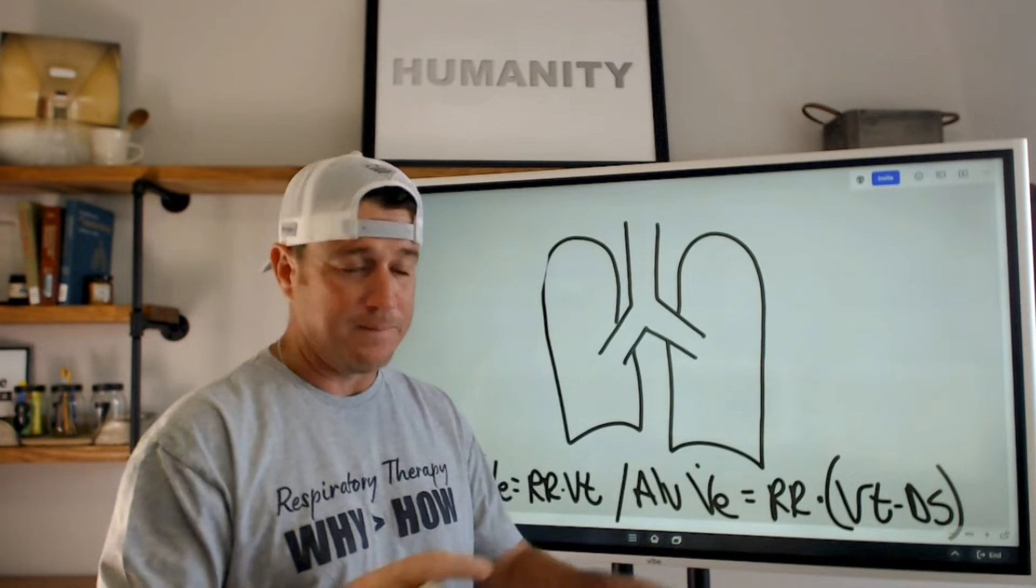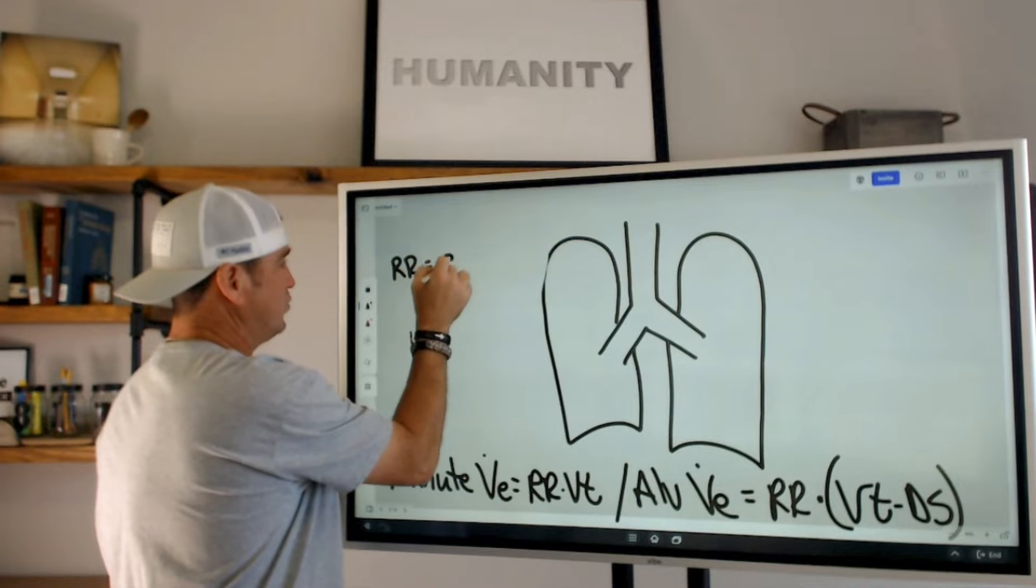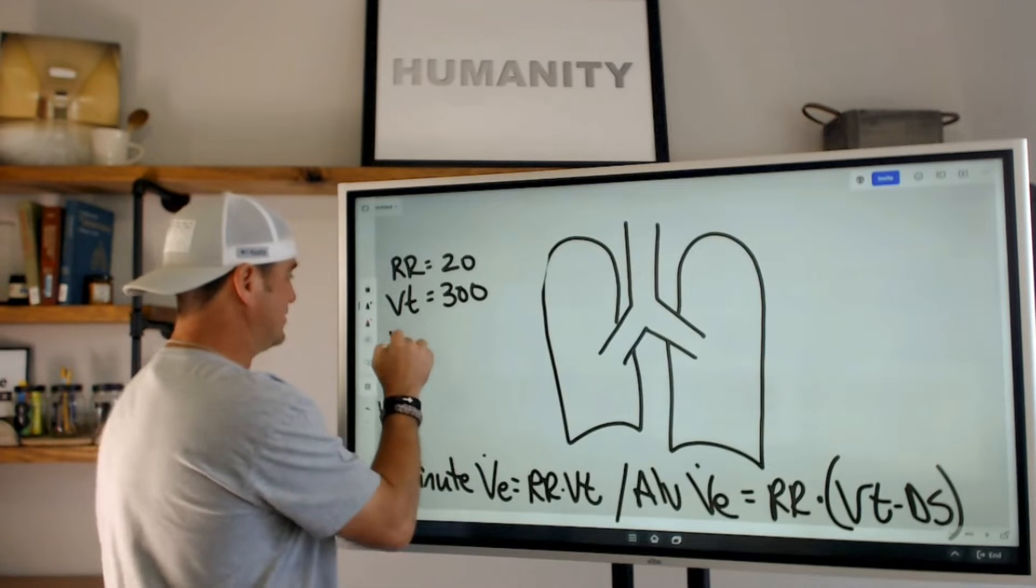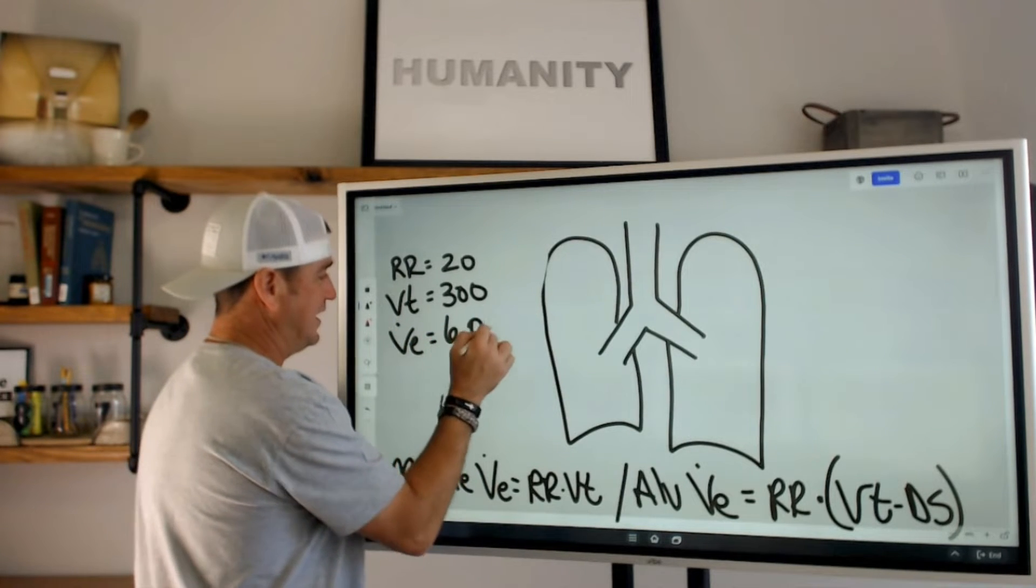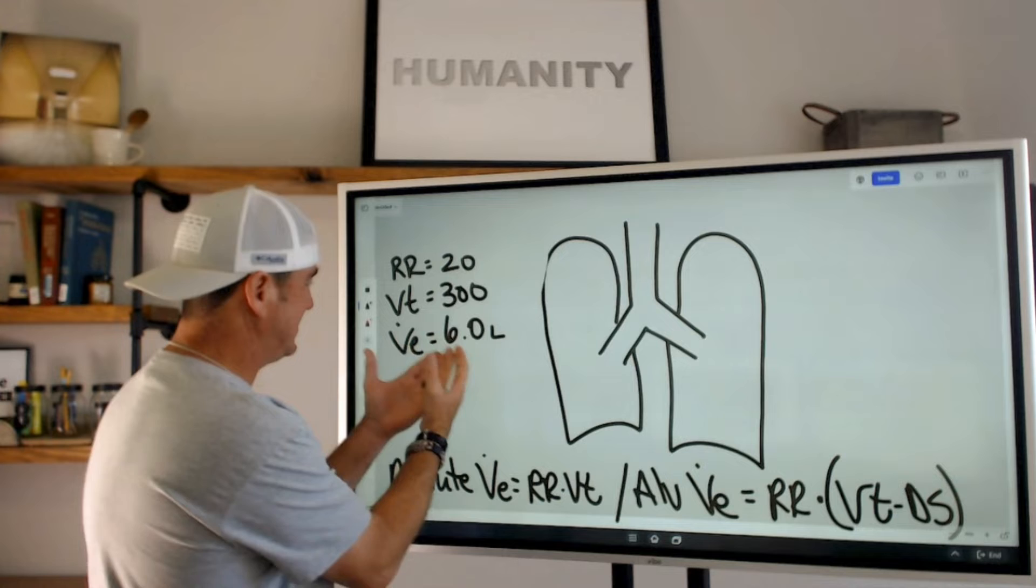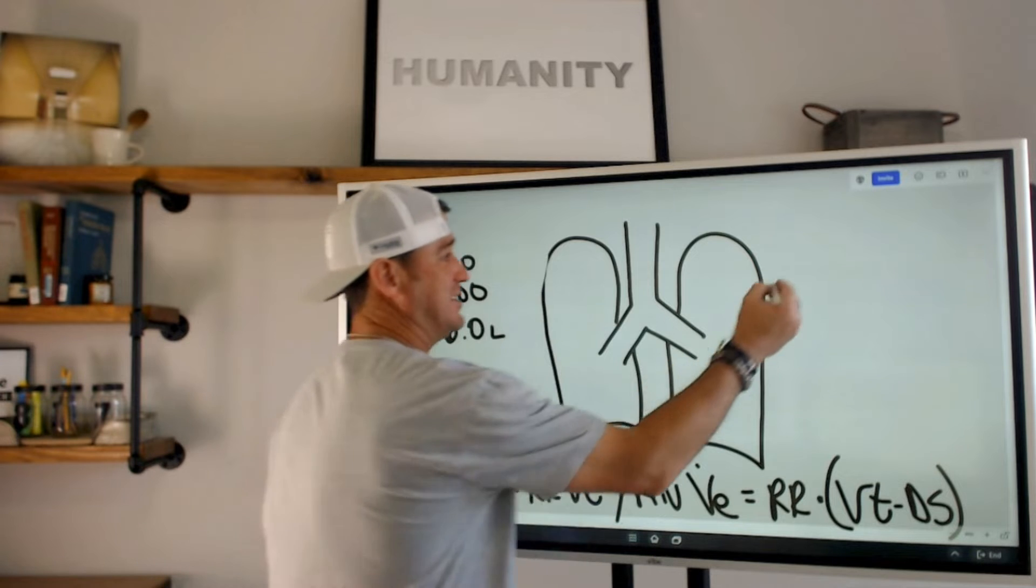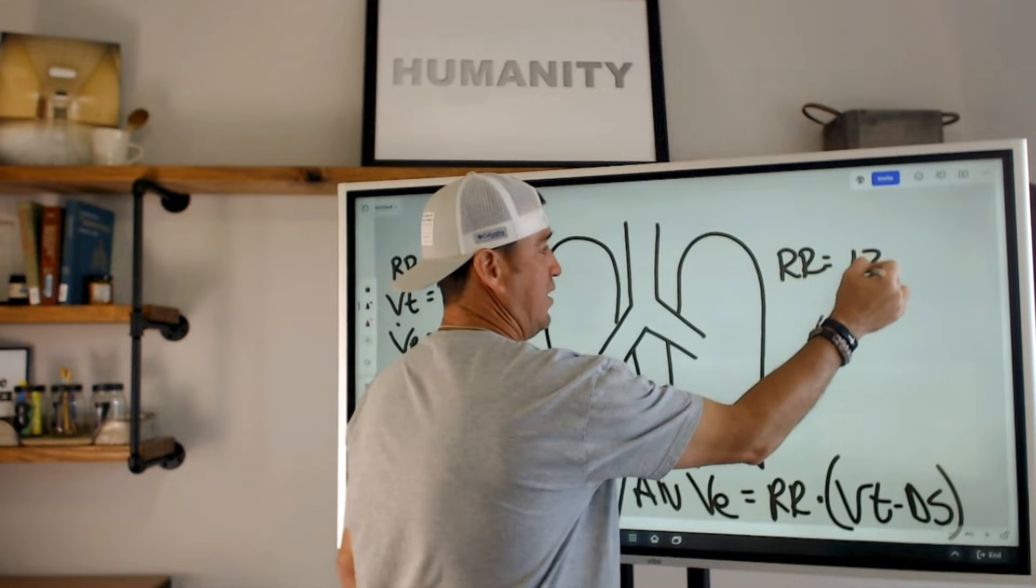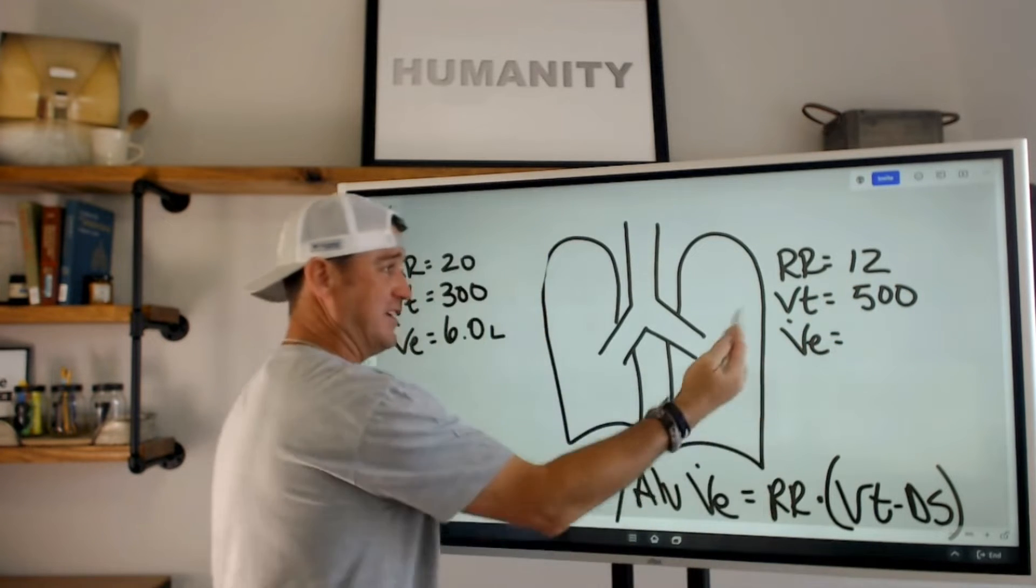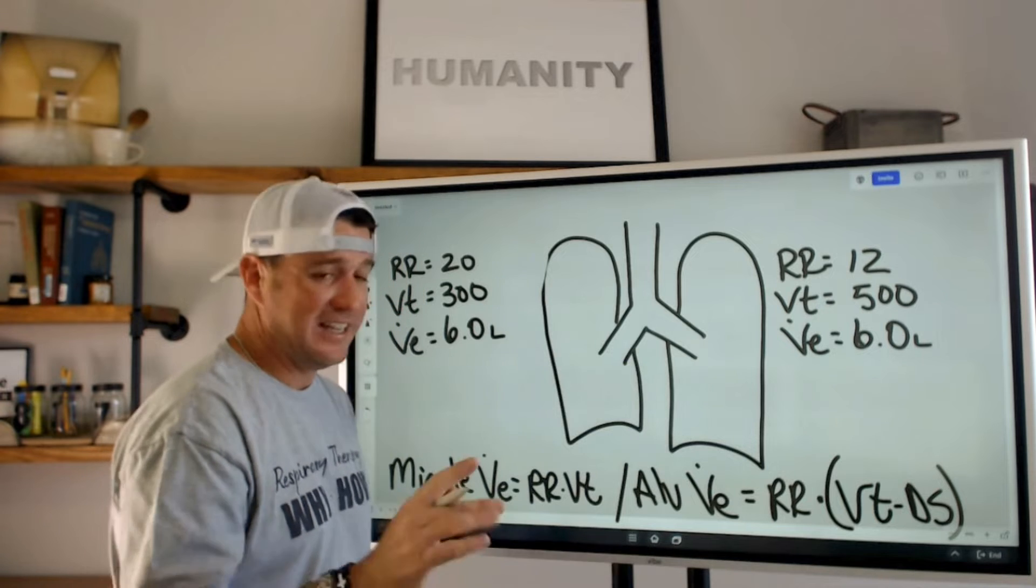So I'm just going to throw some numbers up here. Let's just say you have a person with a respiratory rate of 20 and a tidal volume of 300. That gives us a VE of six liters. 20 times 300 is 6,000 milliliters. We turn milliliters into liters and we can see we have six liters.